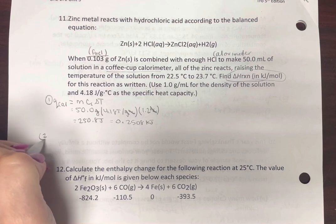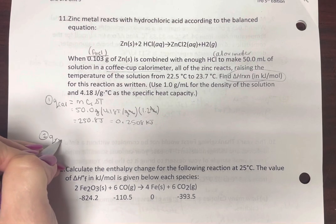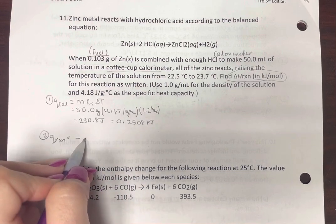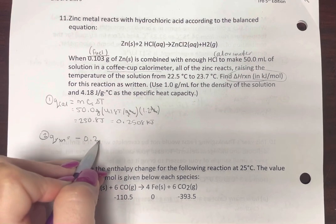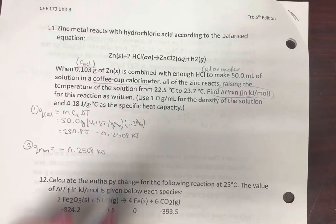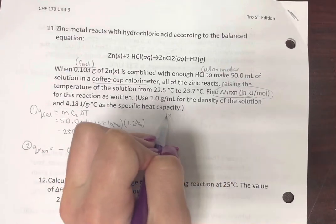Now, we know heat of the reaction. The calorimeter is gaining heat. So the reaction is losing heat. That's just keeping track of our negative sign. Now, we can deal with the fuel.